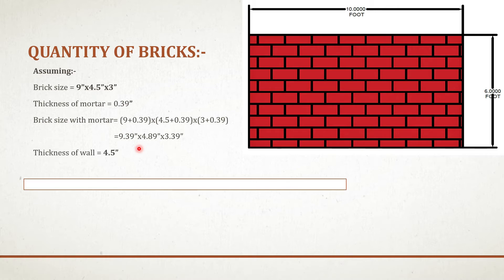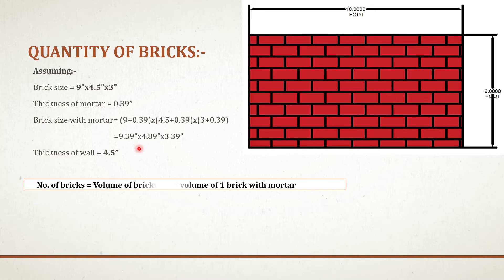As we already know, the thickness of wall is 4.5 inch. To calculate the number of bricks, you have to remember a simple formula: number of bricks equals to volume of brickwork divided by volume of one brick with mortar.